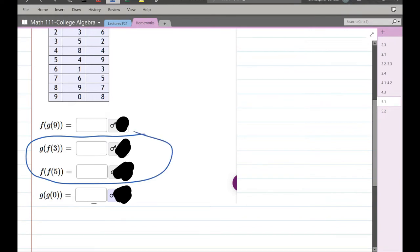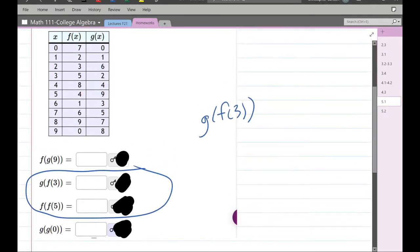We're going to start by doing g of f of 3. Now, I always work inside to out, and on this problem, you have to work from the inside out.